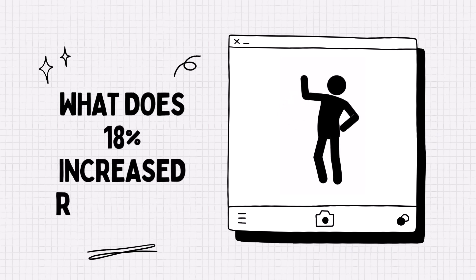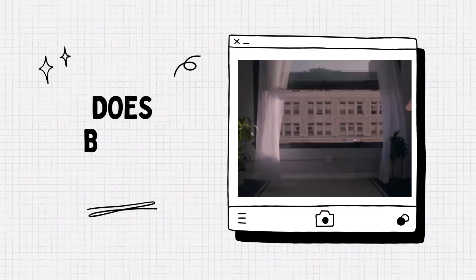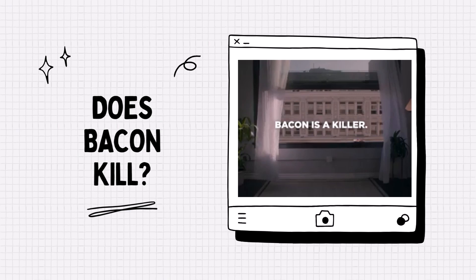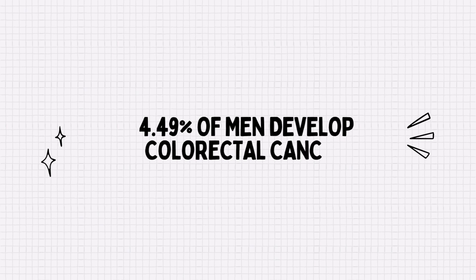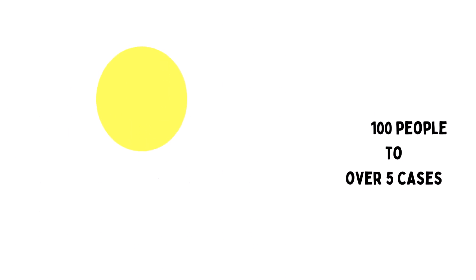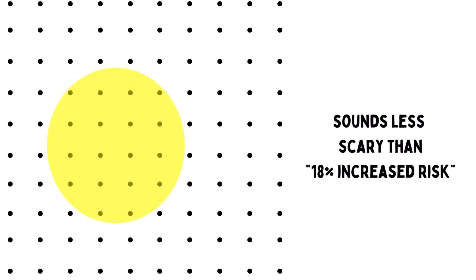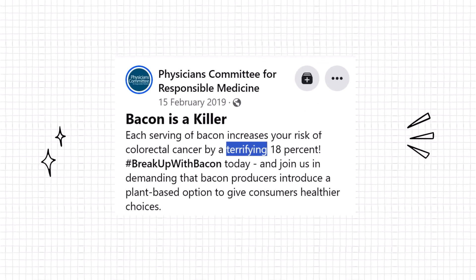But what does that 18% mean? Does that mean you, individually, are 18% more likely to get colorectal cancer if you eat bacon? Is your poor breakfast choice the equivalent of throwing yourself out a window? At the time of this campaign in 2018, about 4.49% of men developed colorectal cancer. A few extra strips of bacon per day would raise that to 5.3%, so just under one more case per 100 people. That's still an avoidable rise, but it somehow sounds less scary than 18% — and never mind some of the dubious ways in which data is collected from dietary studies. But that's precisely why risk ratios are often used to communicate risk: they're a lot more impressive.